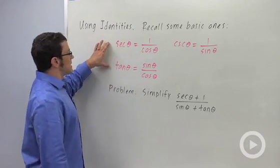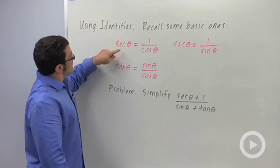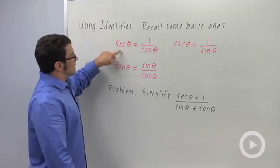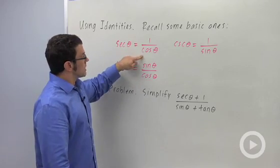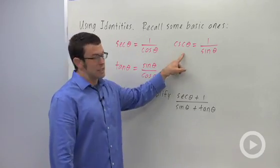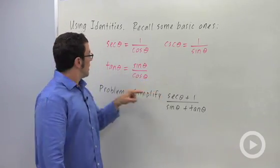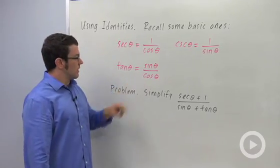Well, let's recall some basic trig identities that we'll need right now. These are some of the reciprocal identities. Secant theta equals 1 over cosine theta. Cosecant theta is 1 over sine theta. And tangent theta is sine theta over cosine theta.